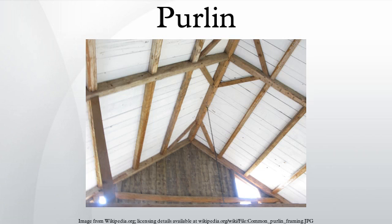In architecture, structural engineering or building, a purlin is any longitudinal, horizontal structural member in a roof, except a type of framing with what is called a crown plate. In traditional timber framing there are three basic types of purlin: purlin plate, principal purlin, and common purlin.